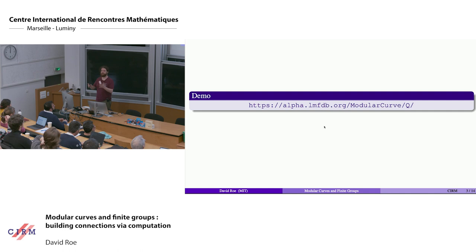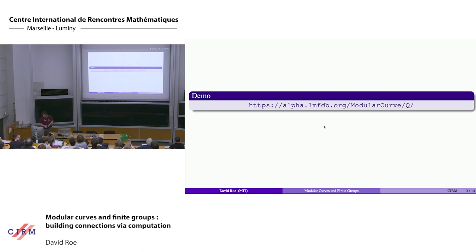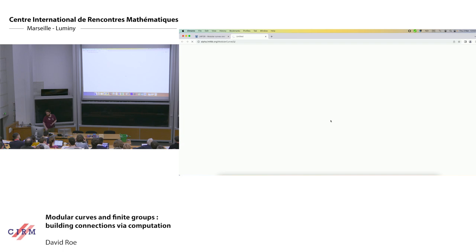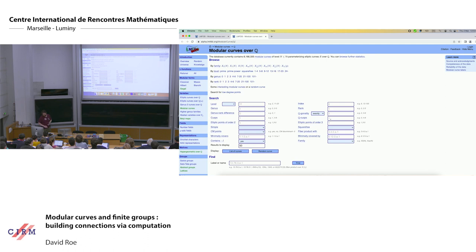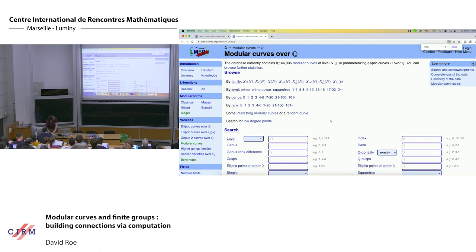First, I would encourage all of you to pull out your laptops and spend the whole talk exploring these sections of the LMFDB. The modular curves is not yet on either of the main LMFDB sites. You have to go to alpha.lmfdb.org to see it. I'm just going to briefly show you what it looks like. So this is the modular curves database. Let me make this a bit bigger. If I can comprehend where a plus sign is on a French keyboard. There it is.